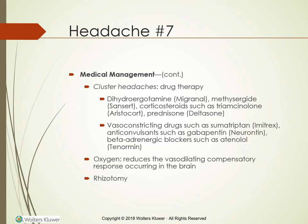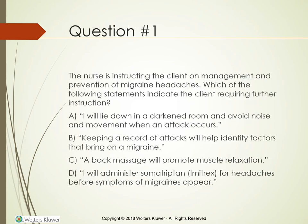Oxygen can be given during a headache to reduce the vasodilating compensatory response occurring in the brain. If none of these medicines work, some people may need a rhizotomy — a surgical procedure that severs nerve roots in the spinal cord — which effectively relieves chronic headache pain.